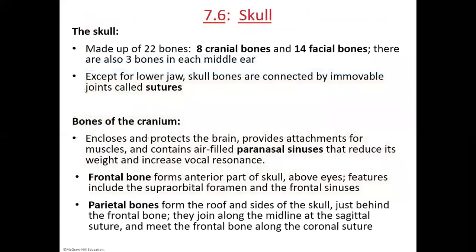Moving on to the skull: the skull actually contains 22 bones, eight of which are cranial and 14 are facial. You also have an additional three bones in each of your ears called ossicles — they're very tiny and are the smallest bones in the human body. Except for your mandible, which is your lower jaw — the part that you move to eat or speak — all of your skull bones are connected to one another through a joint that is not movable.